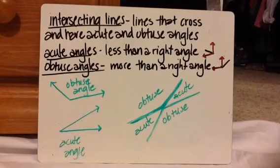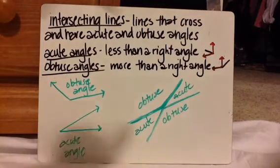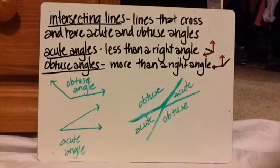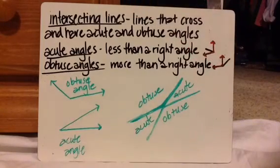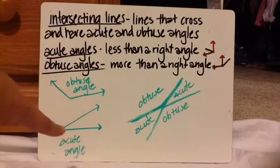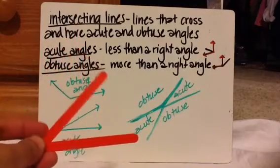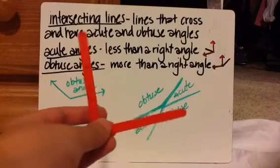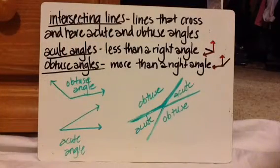Now let's talk about intersecting lines. These are lines that cross and have acute and obtuse angles. An acute angle is less than a right angle, and an obtuse angle is more than a right angle. Here's an example using the sticks: my right angle in the middle, with acute angles smaller than that and obtuse angles wider.